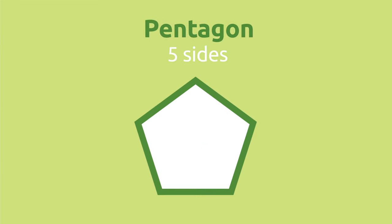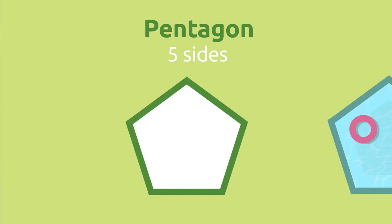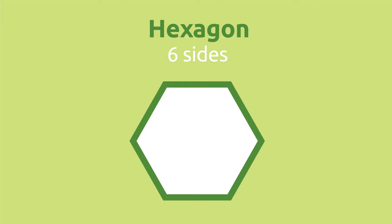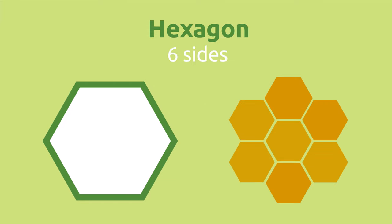Pentagons have five sides. This swimming pool has the shape of a pentagon. Hexagons have six sides. These honeycomb cells have the shape of a hexagon.